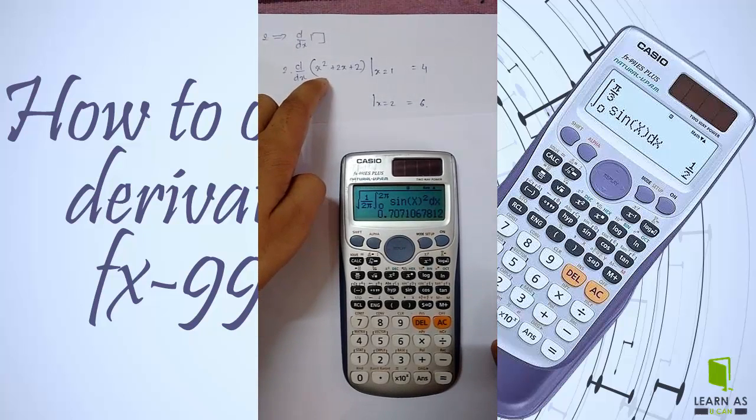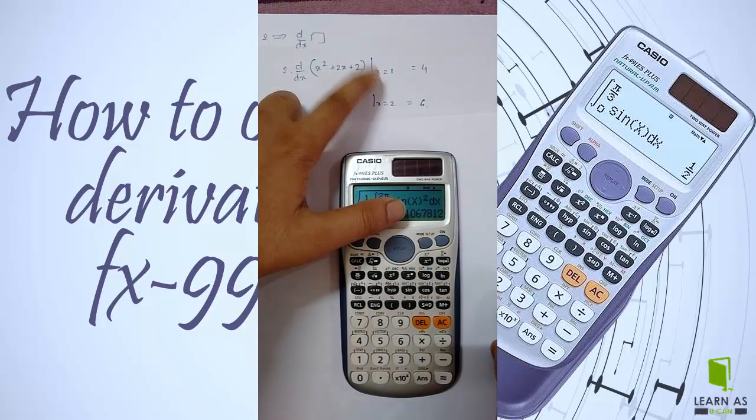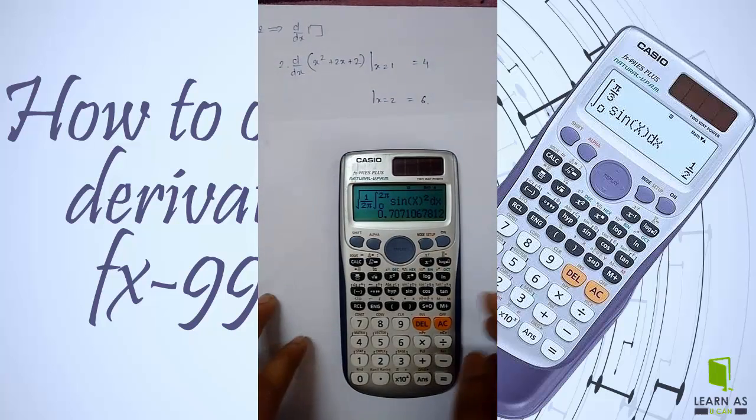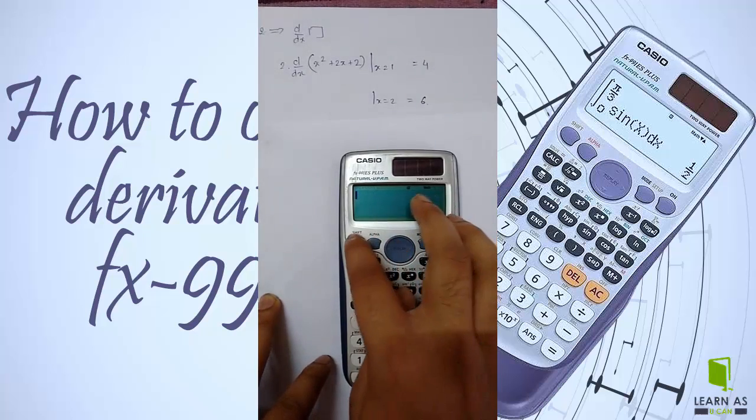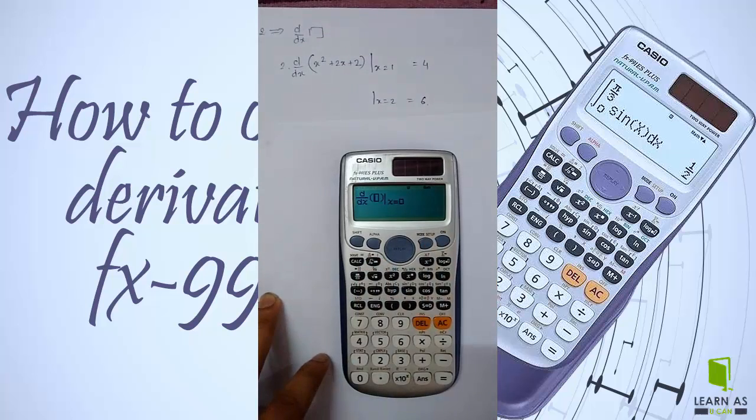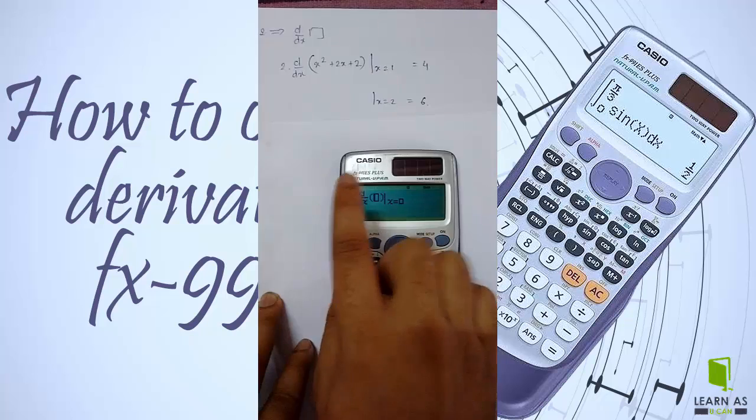Here the function is x squared plus 2x plus 2, where x equals 1. To calculate this, first select Mode 1, then press Shift and the d by dx button. You can see the prompt now. We need to enter the function in terms of x.